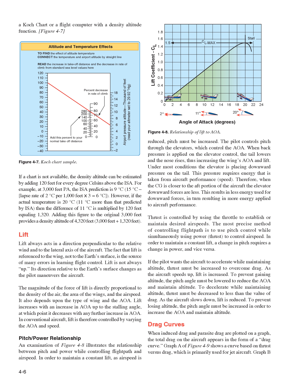If a chart is not available, the density altitude can be estimated by adding 120 feet for every degree Celsius above the ISA prediction. For example, at 3,000 feet pressure altitude, the ISA prediction is 9 degrees Celsius (15 degrees Celsius minus a lapse rate of 2 degrees Celsius per 1,000 feet times 3 equals 6 degrees Celsius). However, if the actual temperature is 20 degrees Celsius — 11 degrees Celsius more than predicted — then 11 degrees Celsius multiplied by 120 feet equals 1,320 feet. Adding this to the original 3,000 feet provides a density altitude of 4,320 feet.